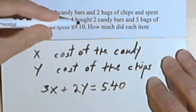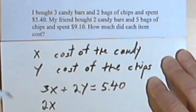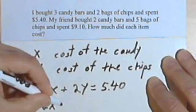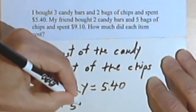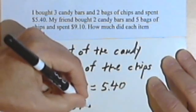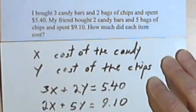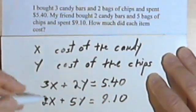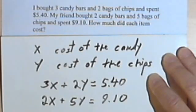My friend bought two candy bars, so he paid 2x for his candy bars, two times the cost of the candy bars, plus he bought five bags of chips, so he spent five times the cost of a bag of chips, and he paid $9.10. So once again, I've got two equations with two unknowns. I've got a system of equations. You can solve this whatever way you think will be most convenient. Let's look at another one.